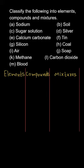Elements are pure substances consisting only of one type of atom, whereas compounds are also pure substances but they consist of two or more different types of atoms which are chemically combined. Mixtures are two or more different types of substances which are not chemically combined.